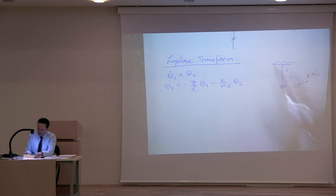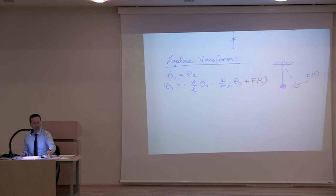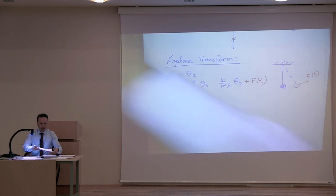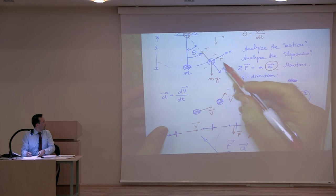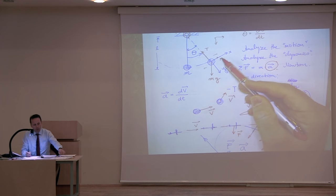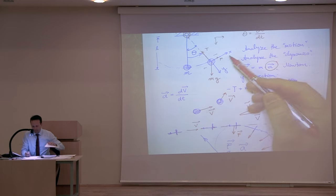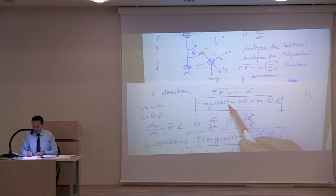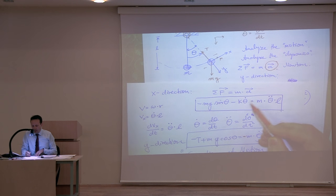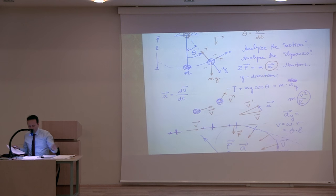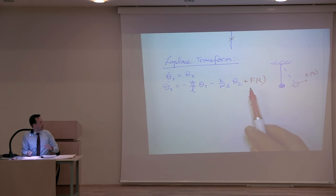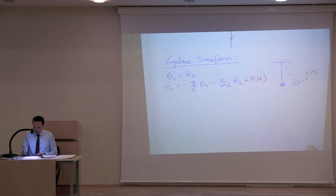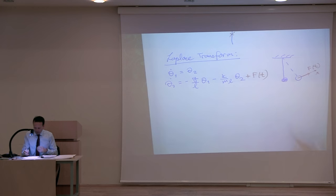You're suggesting theta-2-dot — that's correct. This will be my theta-2-dot, coming from the x-direction equation. The equation of motion in the x direction is: minus M*G*sine(theta) minus K*theta-dot plus some F. This equation corresponds to theta-2-dot, so I would just add the force in the positive direction. That's my input.